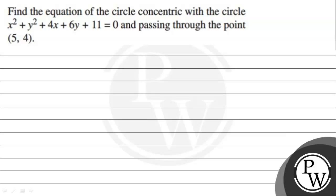Let's read the given question. The question states: Find the equation of the circle concentric with the circle x² + y² + 4x + 6y + 11 = 0 and passing through the point (5, 4).